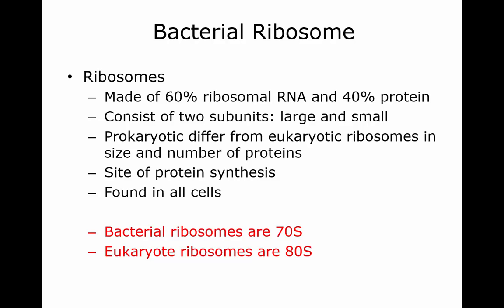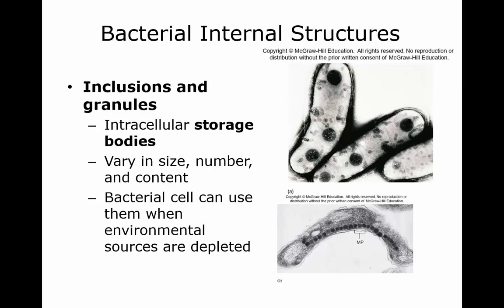All cells have ribosomes, and that 70S and 80S — the S denotes the sedimentation coefficient, just FYI. You also have some internal structures in addition to the nucleoid region and the ribosomes that are not bound by membranes, because remember these are prokaryotes.